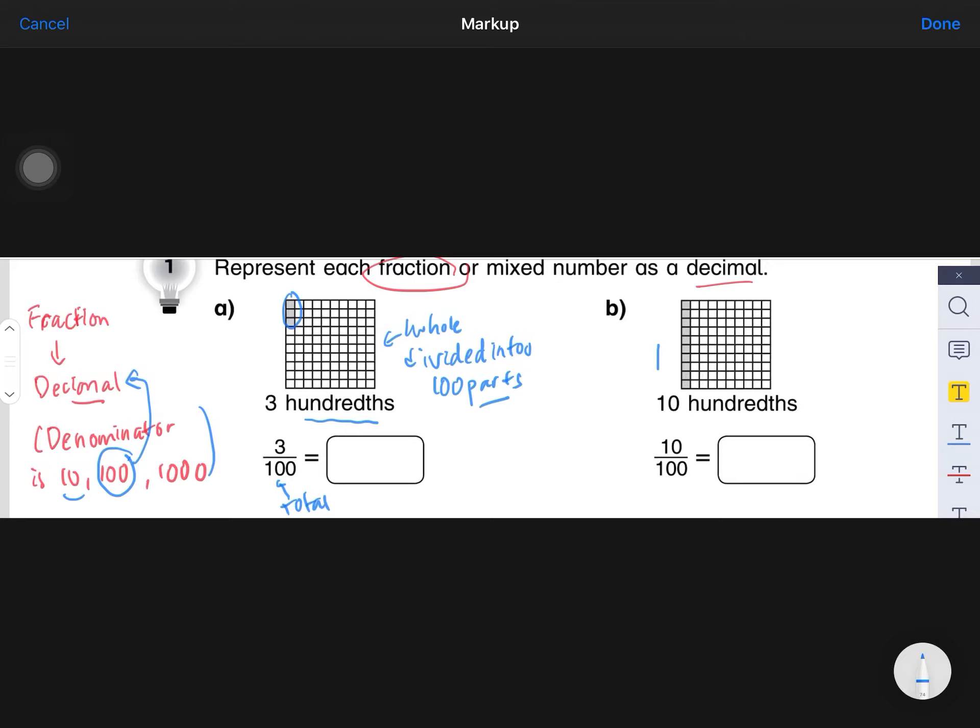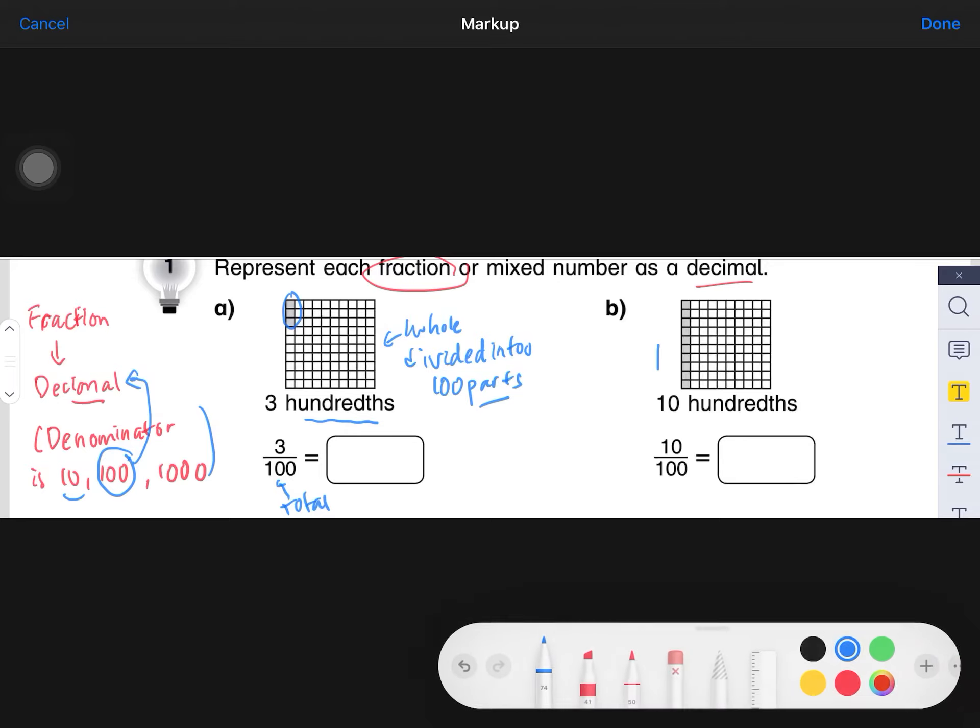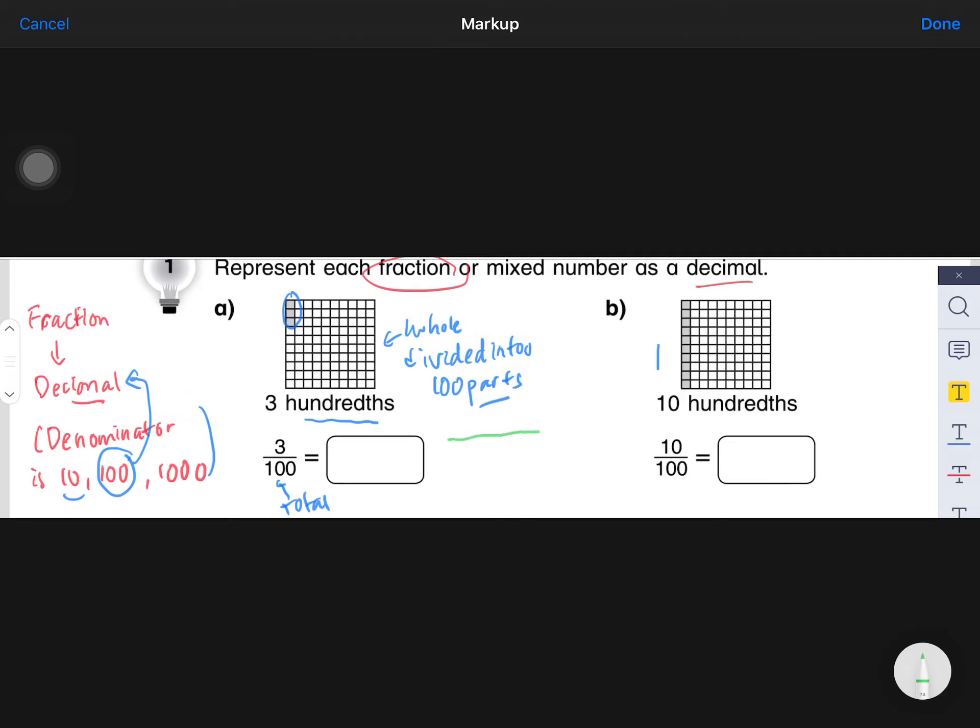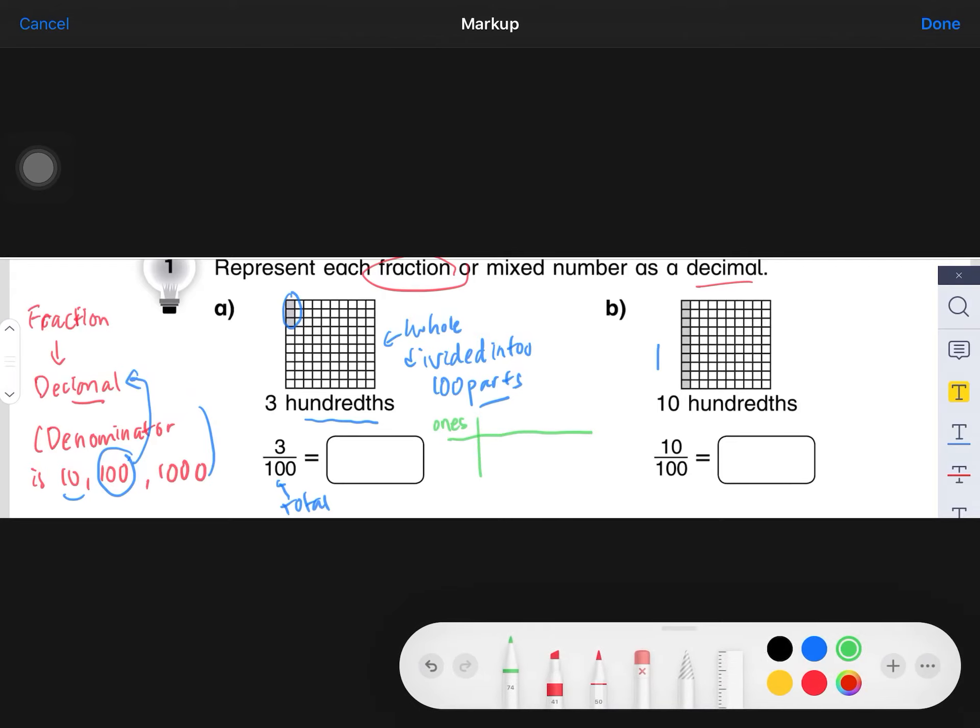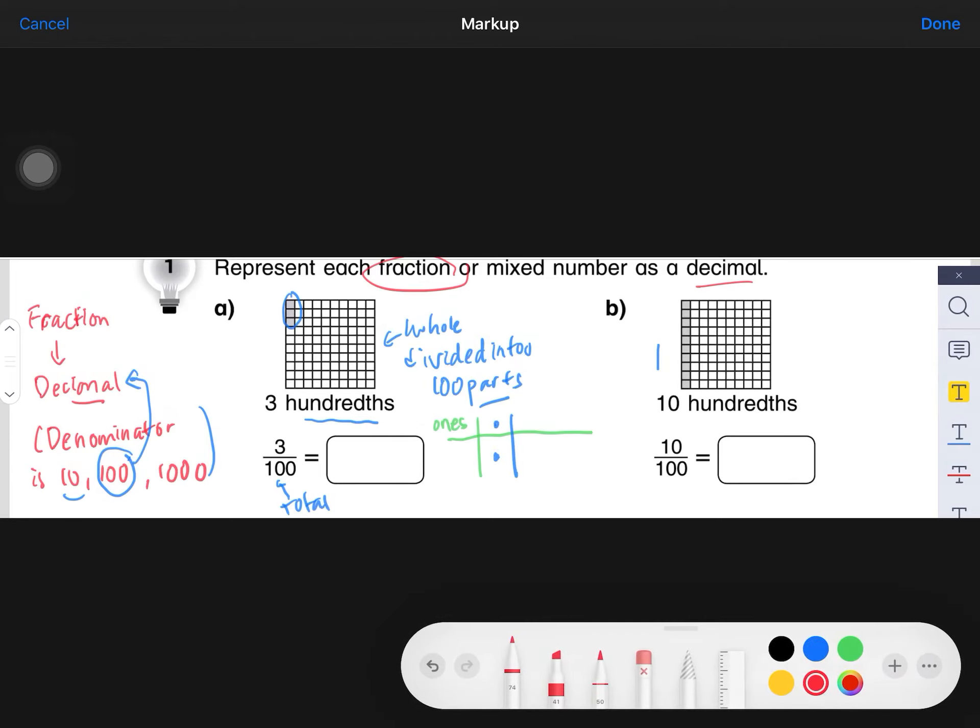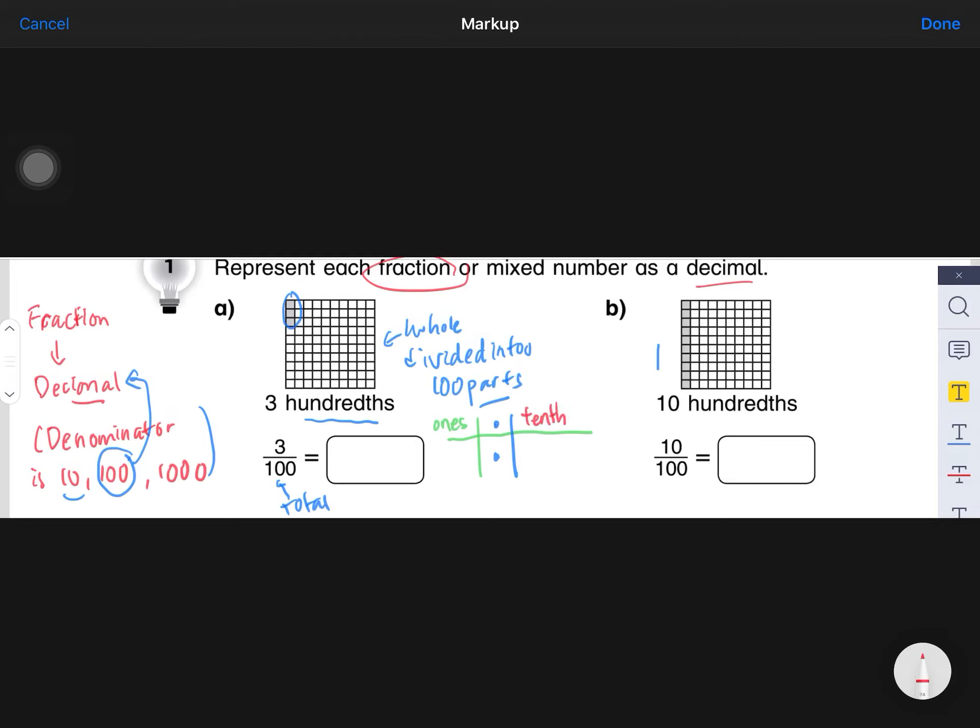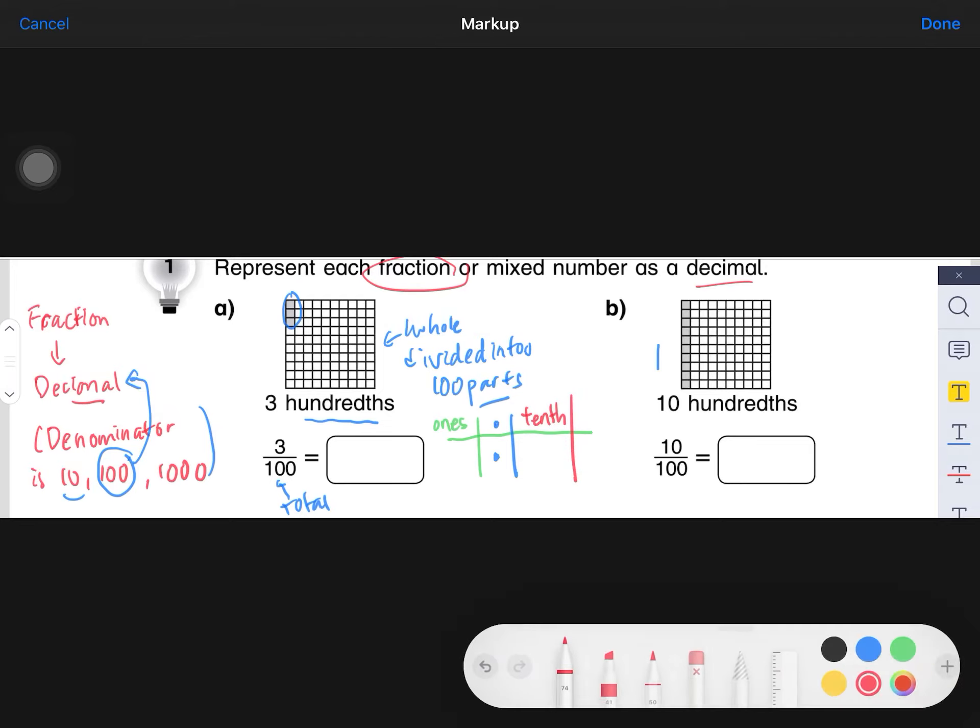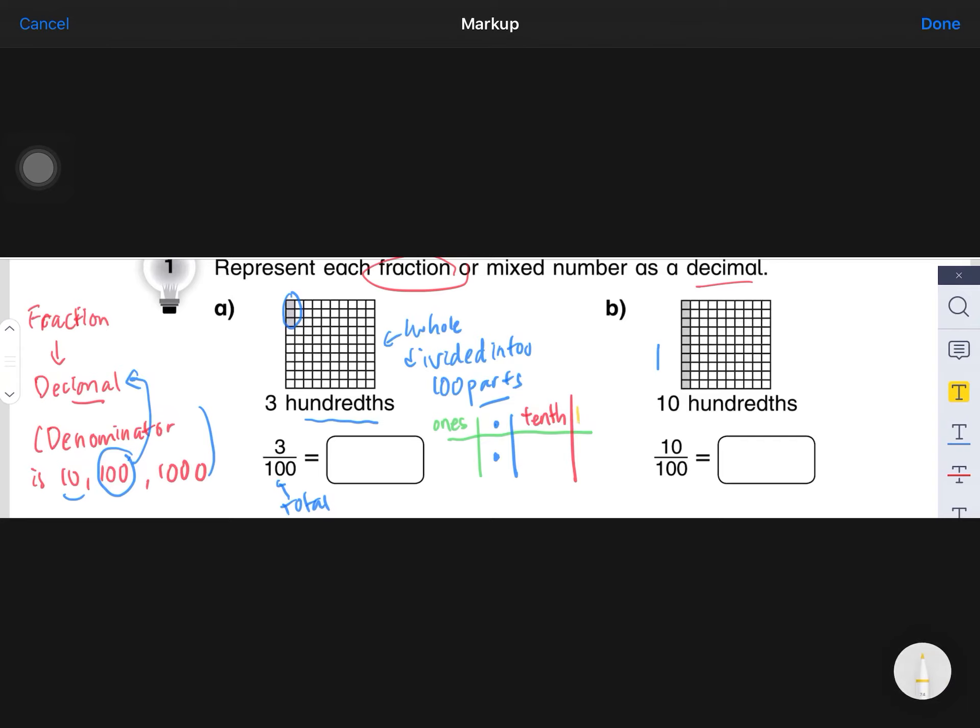Okay, so 3/100. If I draw the place value table, remember it's 1 (ones), and then don't forget the decimal point, followed by the tenths, and then followed by the last one. Today we are going to learn the last one, which is the hundredths.